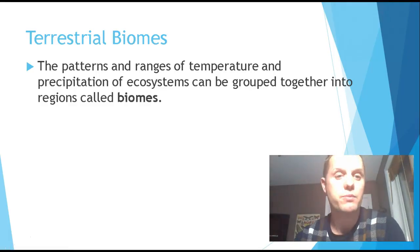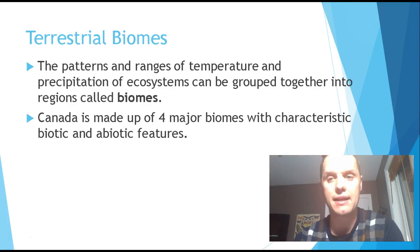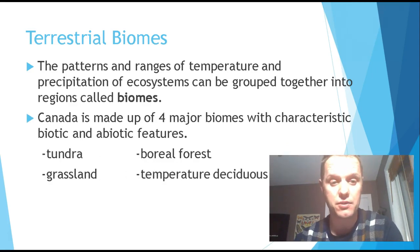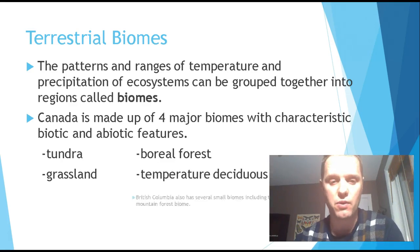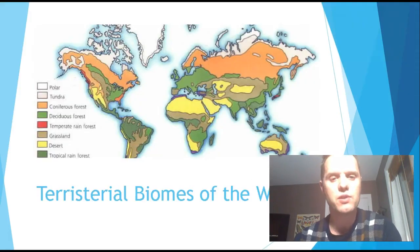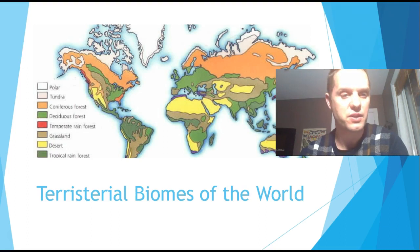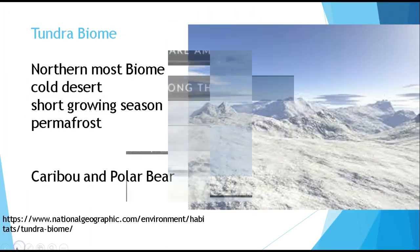We're now going to talk about terrestrial biomes. The patterns and ranges of temperature and precipitation of ecosystems can be grouped into regions called biomes. There are four major biomes in Canada — tundra, grassland, boreal forest, and temperate deciduous forest — each with their own unique biotic and abiotic features. British Columbia also has several small biomes including the mountain forest biome, but we won't discuss those in detail. Looking globally, you can see there are many types: desert, grassland, temperate rainforest, deciduous rainforest, and coniferous forest.